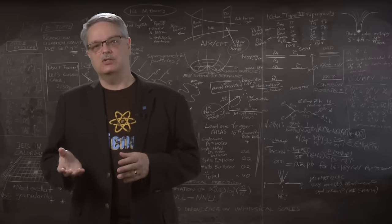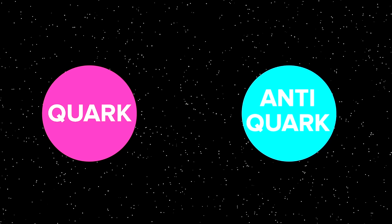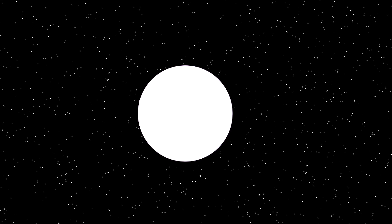Similarly, antiquarks have an opposite charge, so a quark and an antimatter quark can cancel out and make a particle with no strong charge.